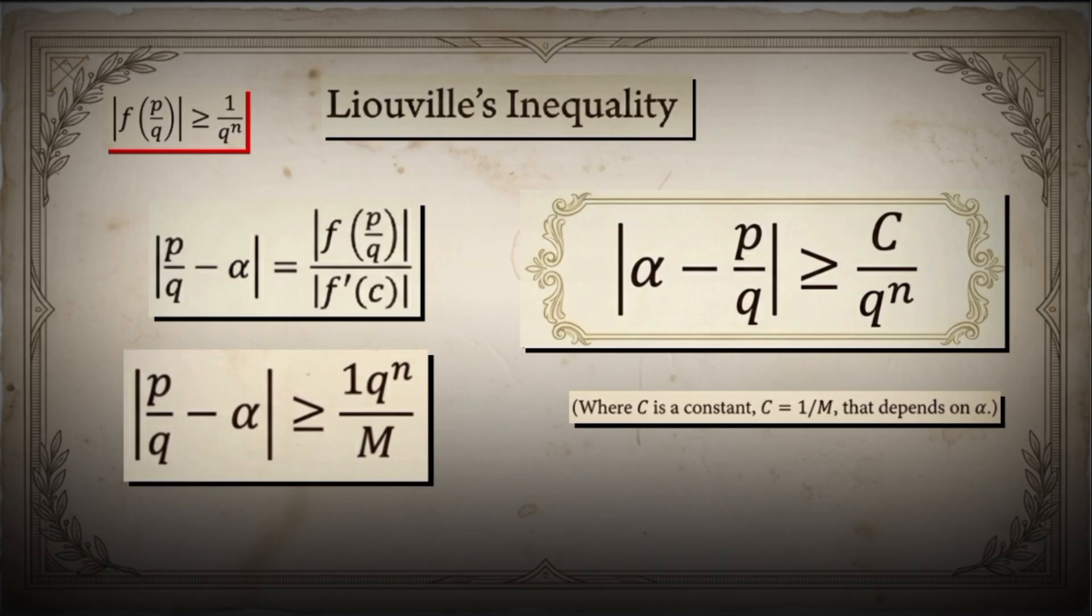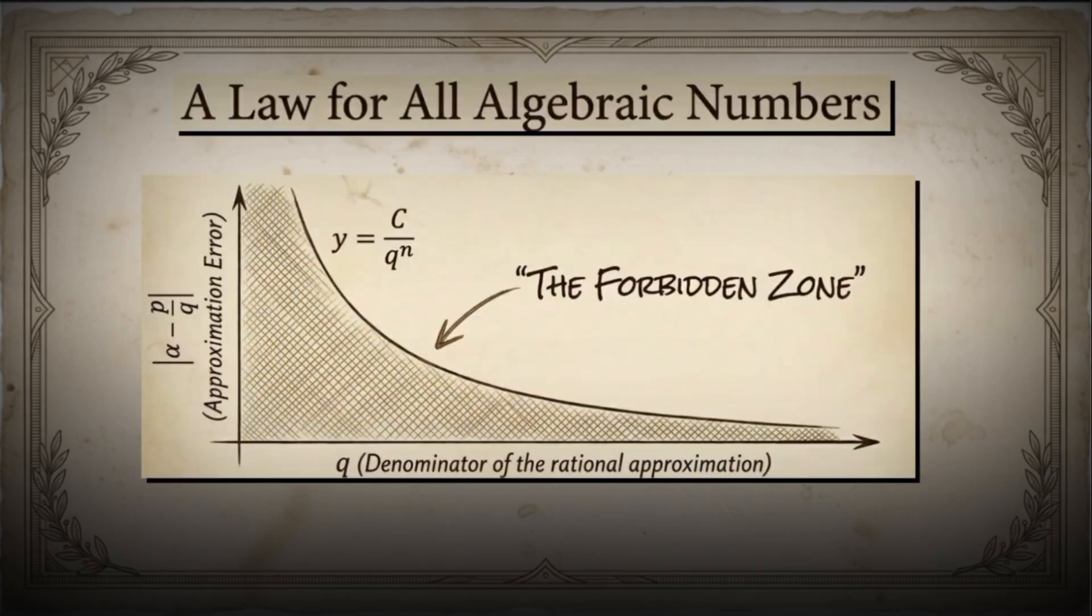So what does this inequality tell us? Any algebraic number of degree n cannot be approximated too well by rational numbers. Specifically, if you try to approximate it with p over q, the error is bounded below by roughly 1 over q to the power n. There's always a gap.